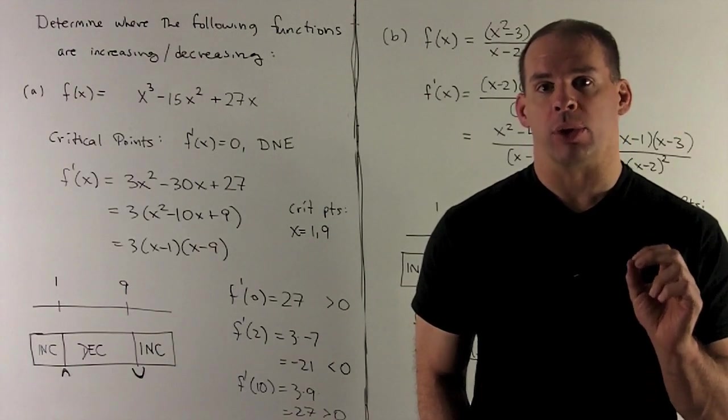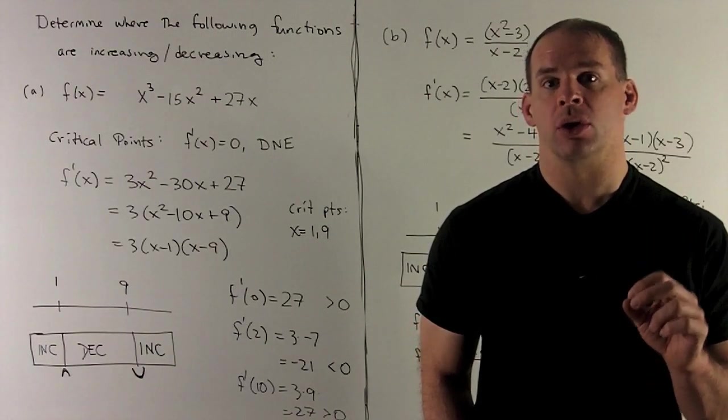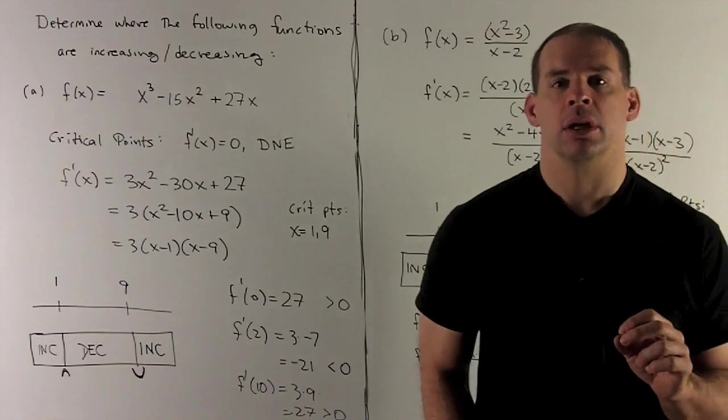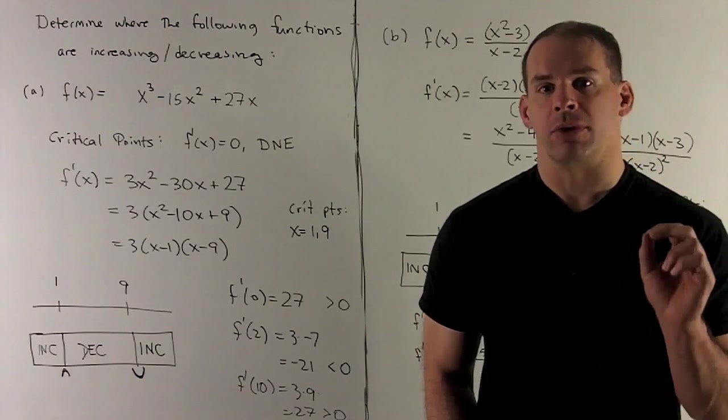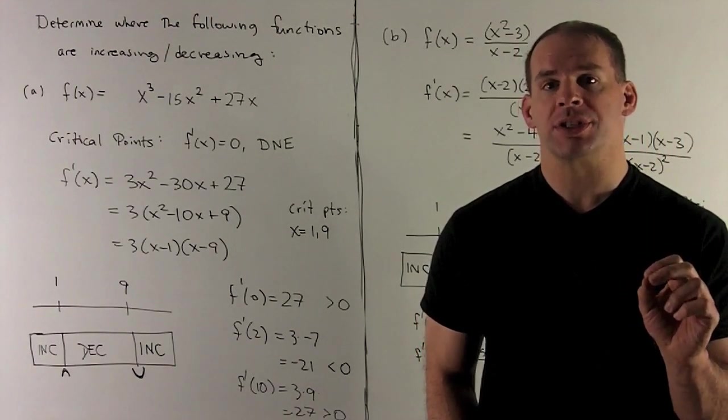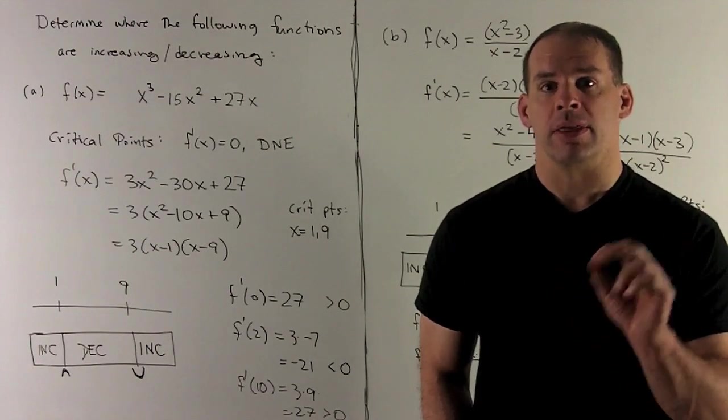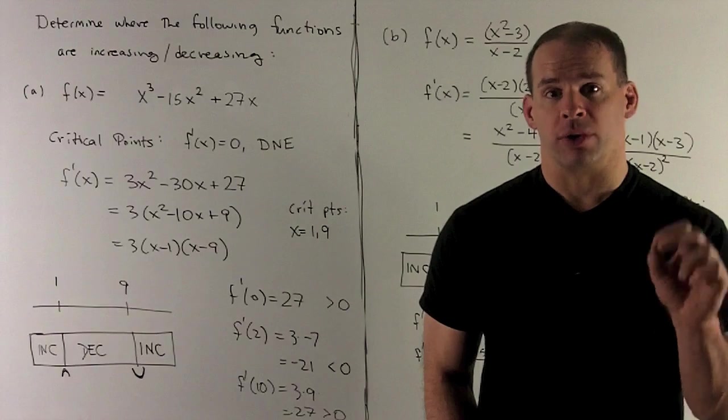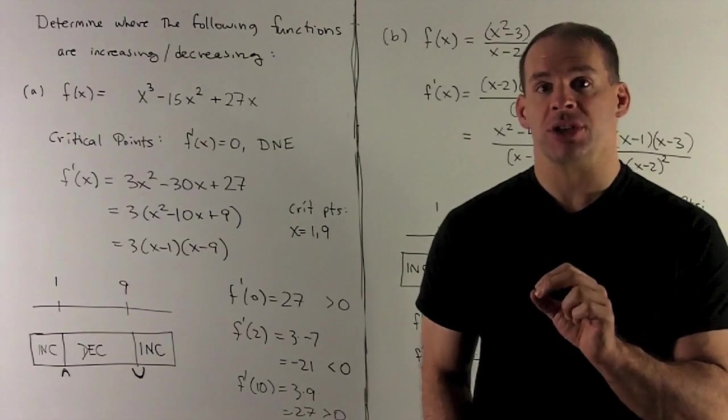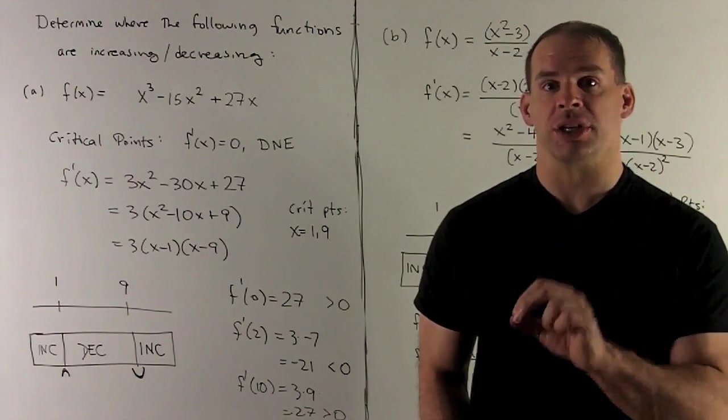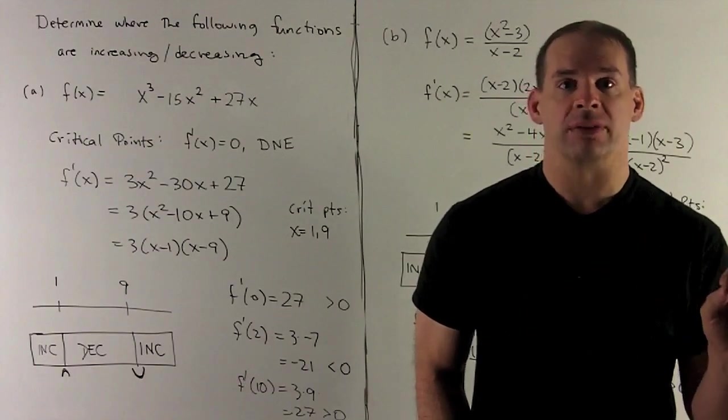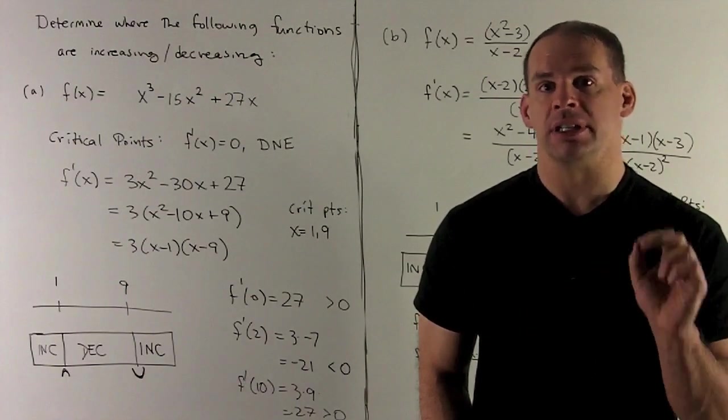Determine the regions where the following functions are increasing or decreasing. So what's our procedure? First, we're going to find the critical points. That's going to divide our region up into pieces. Then all I need to do is check our derivative at one point in each of those regions to determine increasing or decreasing. So if positive, increasing. If negative, decreasing.